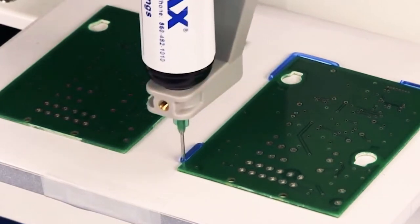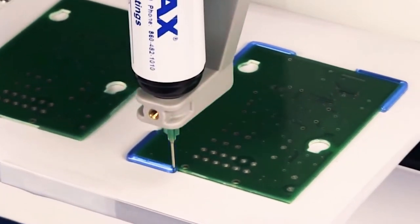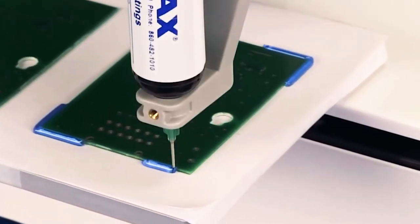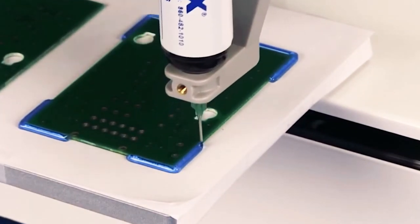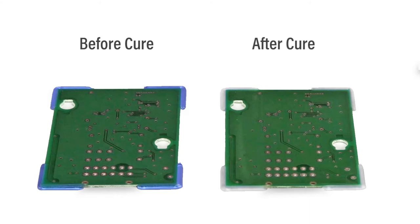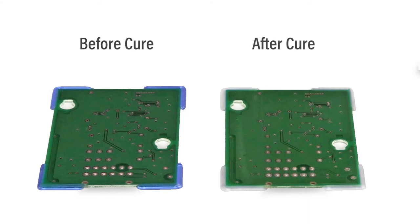C-Cure technology gives the adhesive a bright blue color in the uncured state, making it highly visible when dispensed around PCB components. Upon sufficient exposure to light energy, the adhesive transitions from blue to colorless, indicating complete cure of the material.